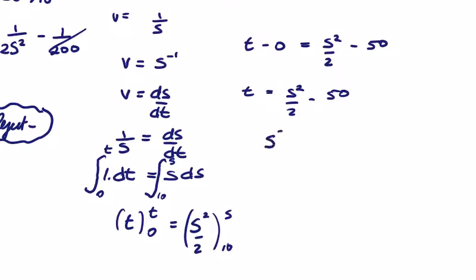So we're solving for s. s squared is equal to t plus 50, so s is equal to the square root of t plus 50. And it could be the plus and minus version of this.